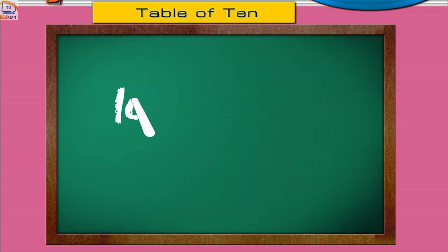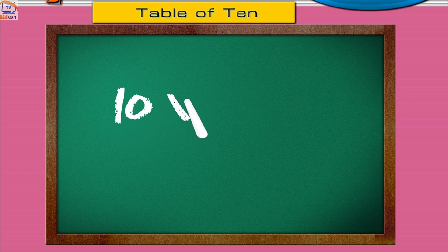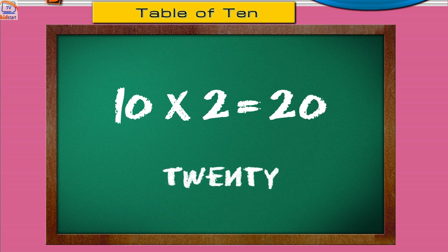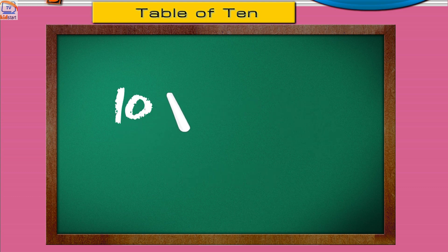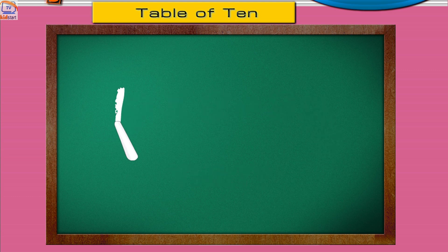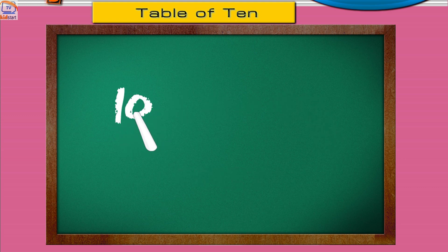Ten ones are ten. Ten twos are twenty. Ten threes are thirty. Ten fours are forty. Ten fives are fifty.